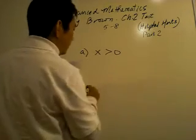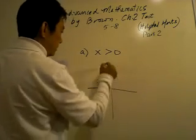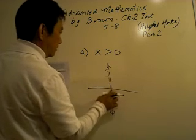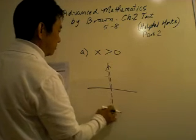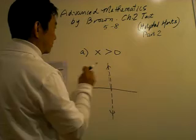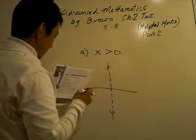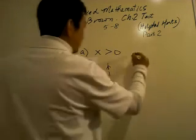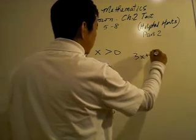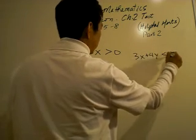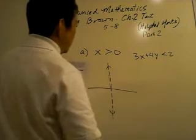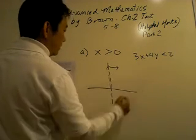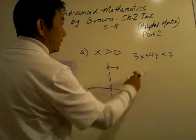Let's get number six. Graph number eight: x is greater than zero. x equals zero looks something like this but with dashed lines. Then 3x plus 4y is less than or equal to 2 and x is greater than zero, so it's going to point in this direction.